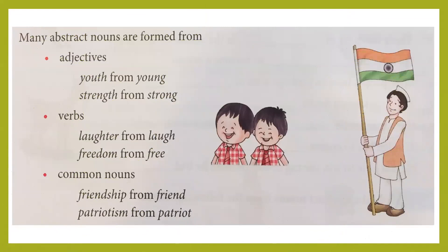Many abstract nouns are formed from adjectives — for example, young becomes youth, and strong becomes strength. Many abstract nouns are also formed from verbs — laugh becomes laughter, and free becomes freedom. Abstract nouns can also be formed from common nouns — friend becomes friendship, and patriot becomes patriotism, which shows a quality. So abstract nouns can be derived from adjectives, verbs, and common nouns.